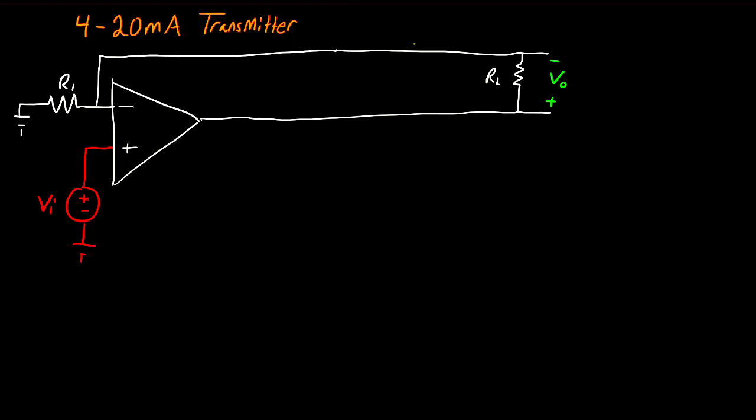We are going to be talking about the 4 to 20 milliamp transmitter. In this video, we're going to start off with the circuit analysis, as well as the advantages that it has over transmitting signals as a voltage.